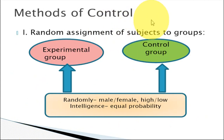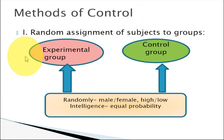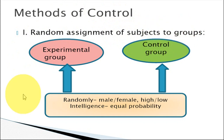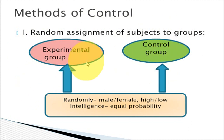There are different types of control methods. Number one, the first and very commonly used method in experimental research is random assignment of subjects to groups. As we already know, the typical experimental research has two groups: a control group and an experimental group.